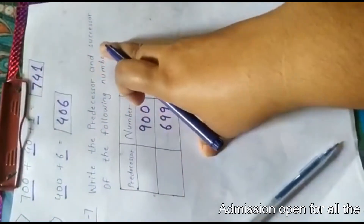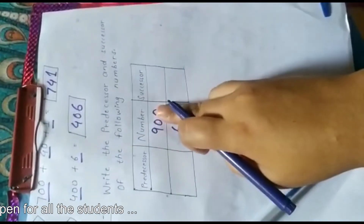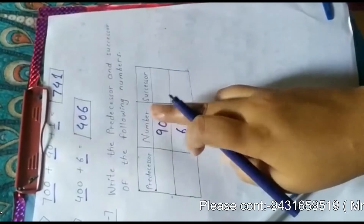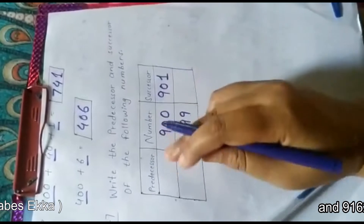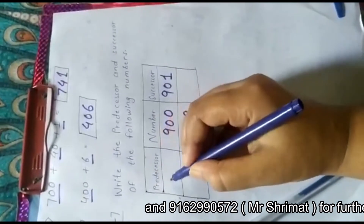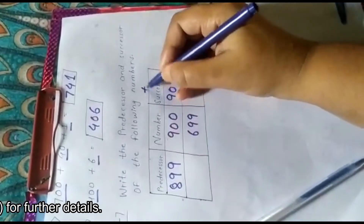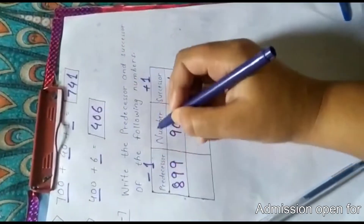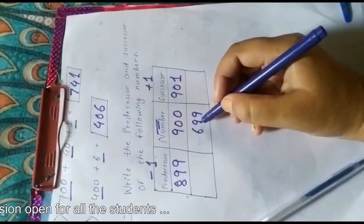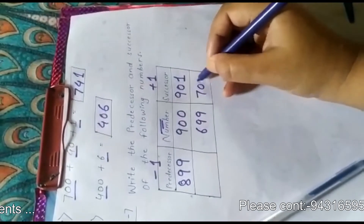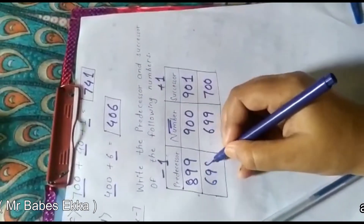Now write the predecessor and successor of the following numbers. For 900: successor of 900 is 901, and predecessor of 900 is 899. Remember, successor always means plus 1 and predecessor always means minus 1 of the given number. For 699: successor of 699 is 700, and predecessor of 699 is 698.